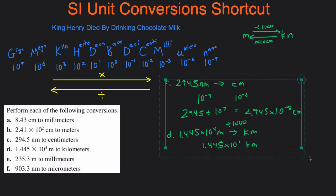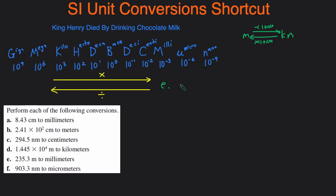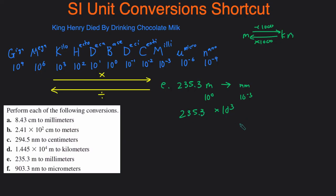For part E, we have 235.3 meters and we're converting it to millimeters. The base unit is 10 to the 0 and millimeters is 10 to the negative 3. The absolute difference between 0 and negative 3 is 10 to the 3. We're going from meters to millimeters — moving to the right — so we multiply: 235.3 multiplied by 10 to the 3 gives 235,300 millimeters, which we can also express in scientific notation.